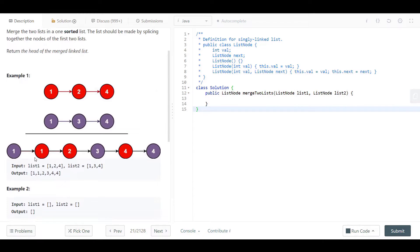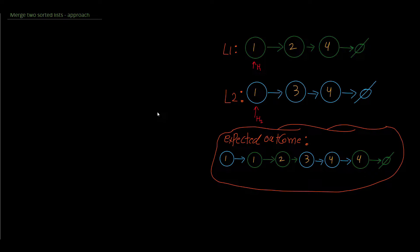Both list one and list two are sorted in non-decreasing order, in other words sorted from small to large. Now let's go to the blackboard. The easiest approach is to compare the two heads of the two linked lists — the head of list one compared with the head of list two — and take the smaller value as the head of the new merged linked list.